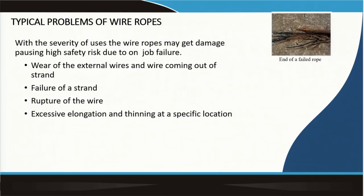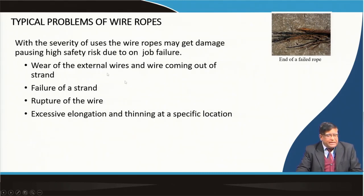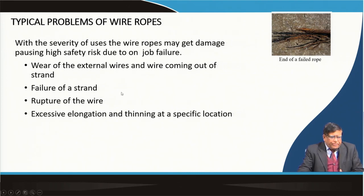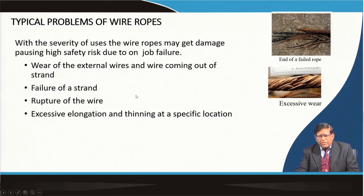Typical problems of wire ropes can be seen in figures: the end of the rope fails — it gets rasped — and all the wires and strands get separated. This is a failed rope. Depending on the type of use, a wire rope can be subjected to very severe conditions where external wires come out of the strand. This strand rasping and excessive elongation can be seen in figures where excessive wear has taken place, reducing the rope's strength.